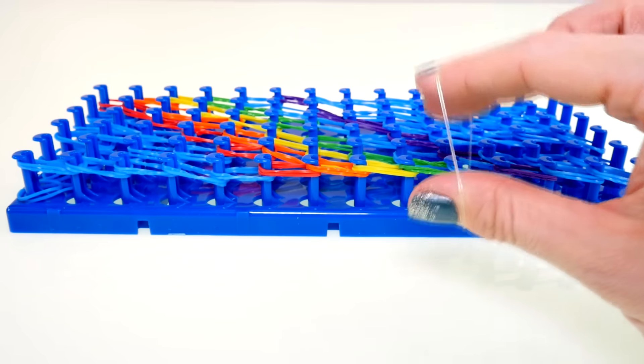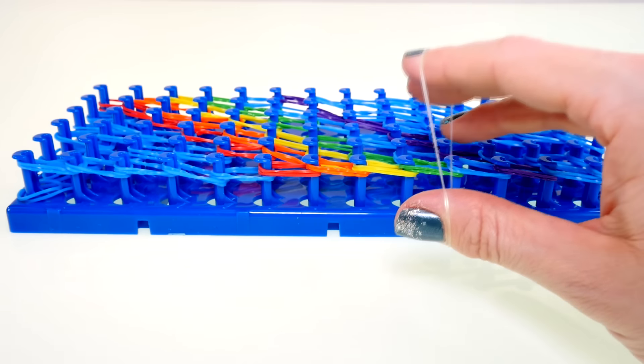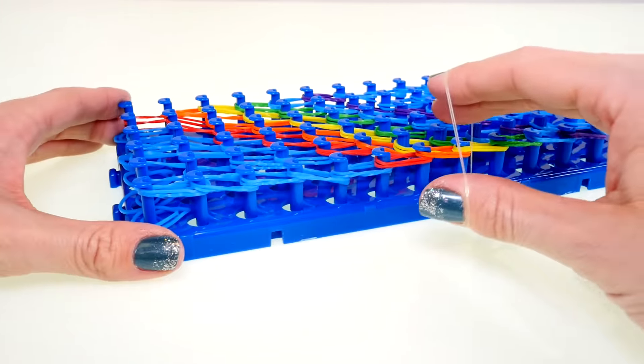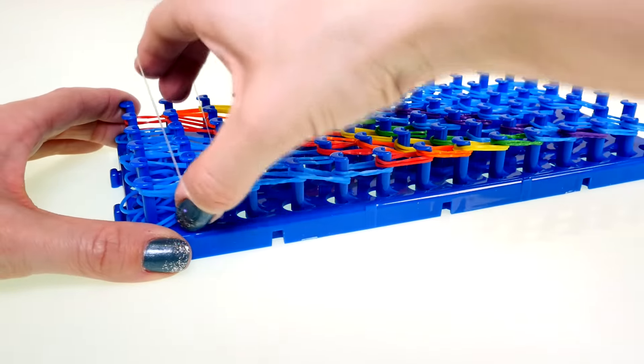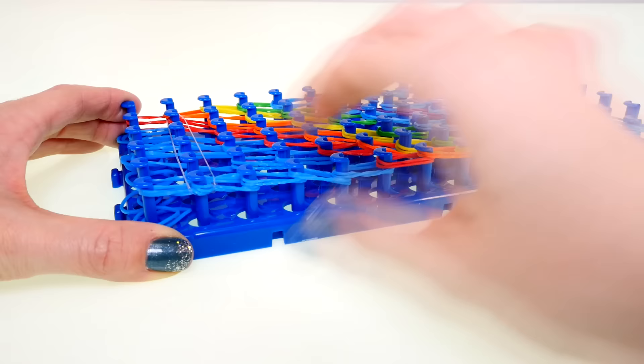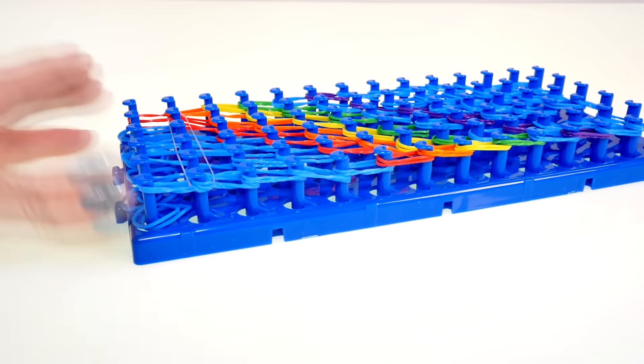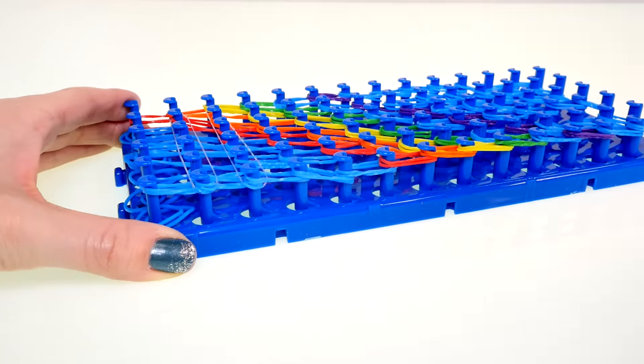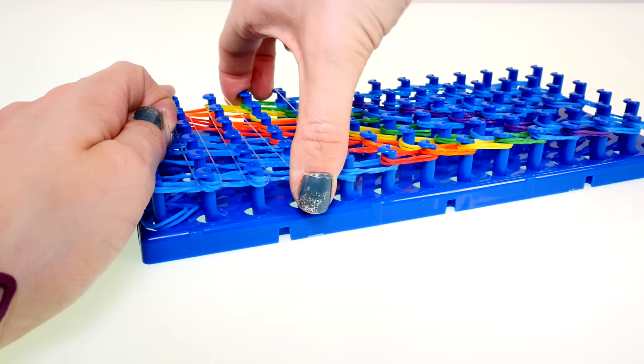The next step is to add the connector bands. These are the clear bands, so starting with the second row we'll stretch these across and then keep going all the way down. This part is so that when we take the design off the loom it will stick together.